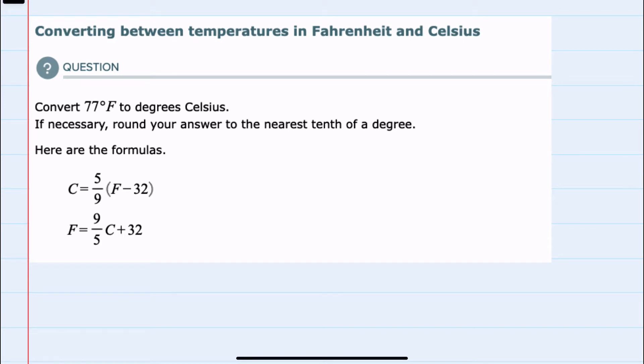We're asked to convert 77 degrees Fahrenheit to degrees Celsius and to round our answer to the nearest tenth if necessary, and we're given two formulas.